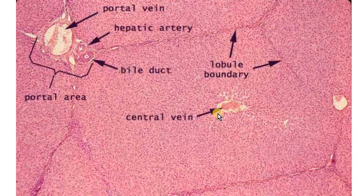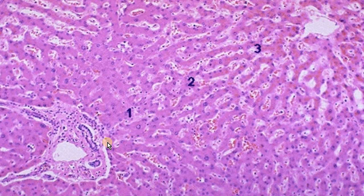I will not spend too much time on liver histology and will encourage you to watch the copper toxicity video for more histology details using the suggested link in the upper right corner. But briefly, the liver is composed of multiple lobules. Each lobule is composed of cords of hepatocytes with a central vein and portal triads. This is a closer magnification of the portal triad, central vein, and cords of hepatocytes.